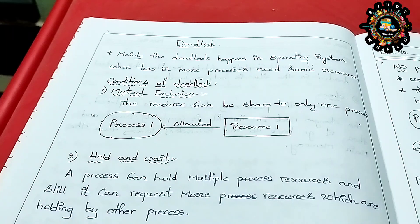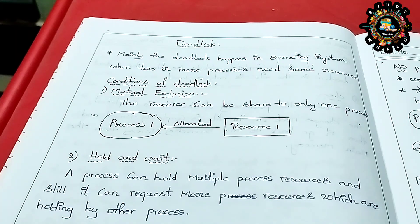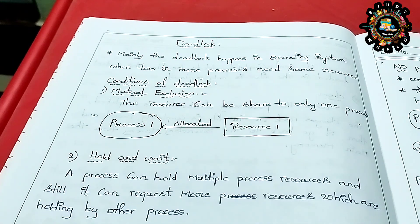When two or more processes need the same resource, and that resource cannot be shared between two processes, then neither process can proceed. If we release a different procedure in this process, should we pay it back? That's when a deadlock occurs.